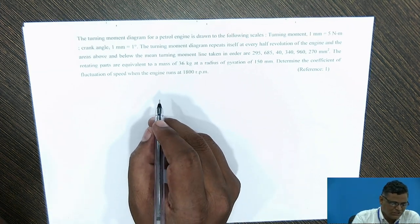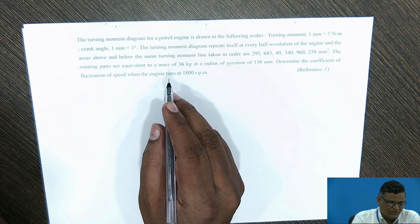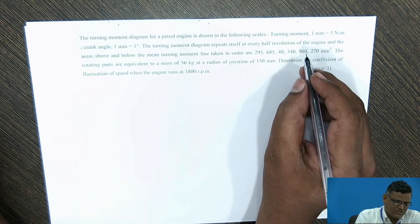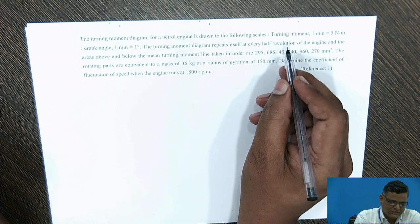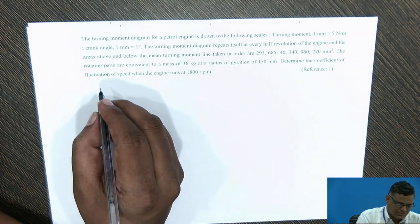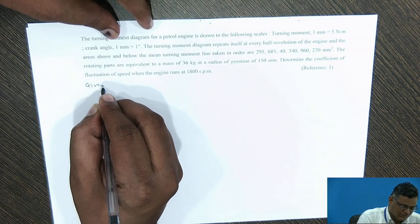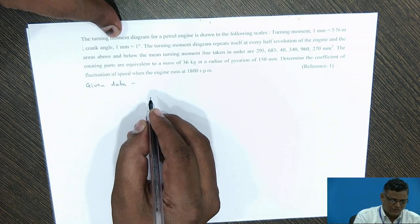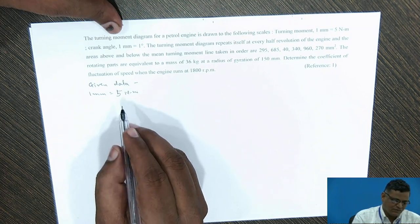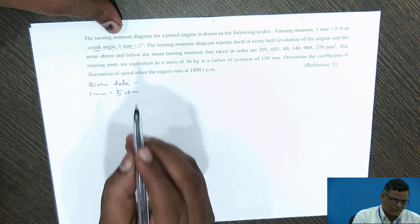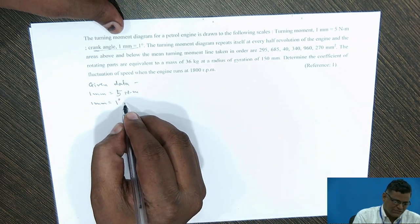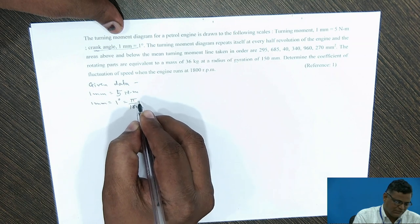The numerical which we are going to solve is given here. While reading the numerical, let us note the data which is given by the author. The turning moment diagram for a petrol engine is drawn to the following scales. For the turning moment, it is 1 mm equal to 5 Newton meter. For crank angle, the scale is 1 mm equal to 1 degree, which converts to pi divided by 180 radians.